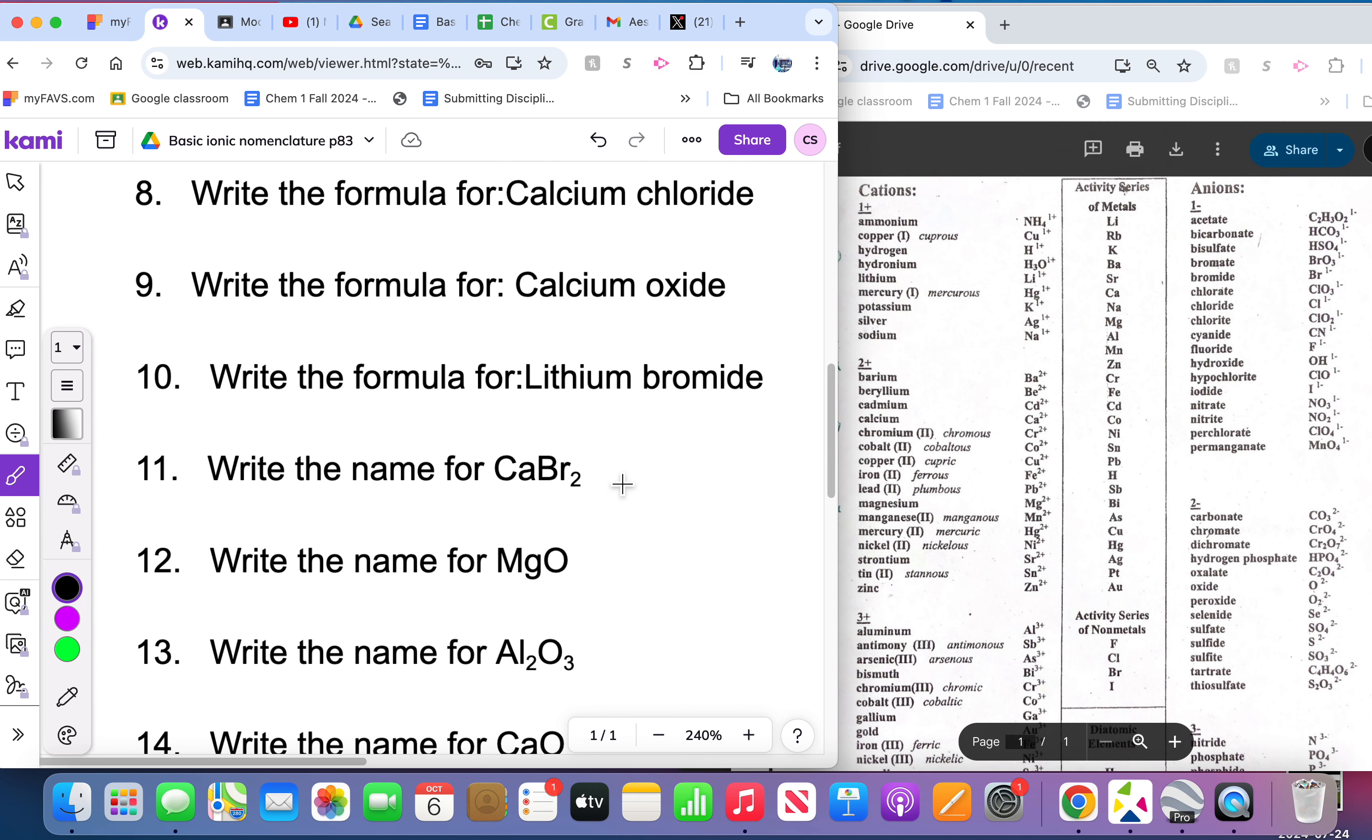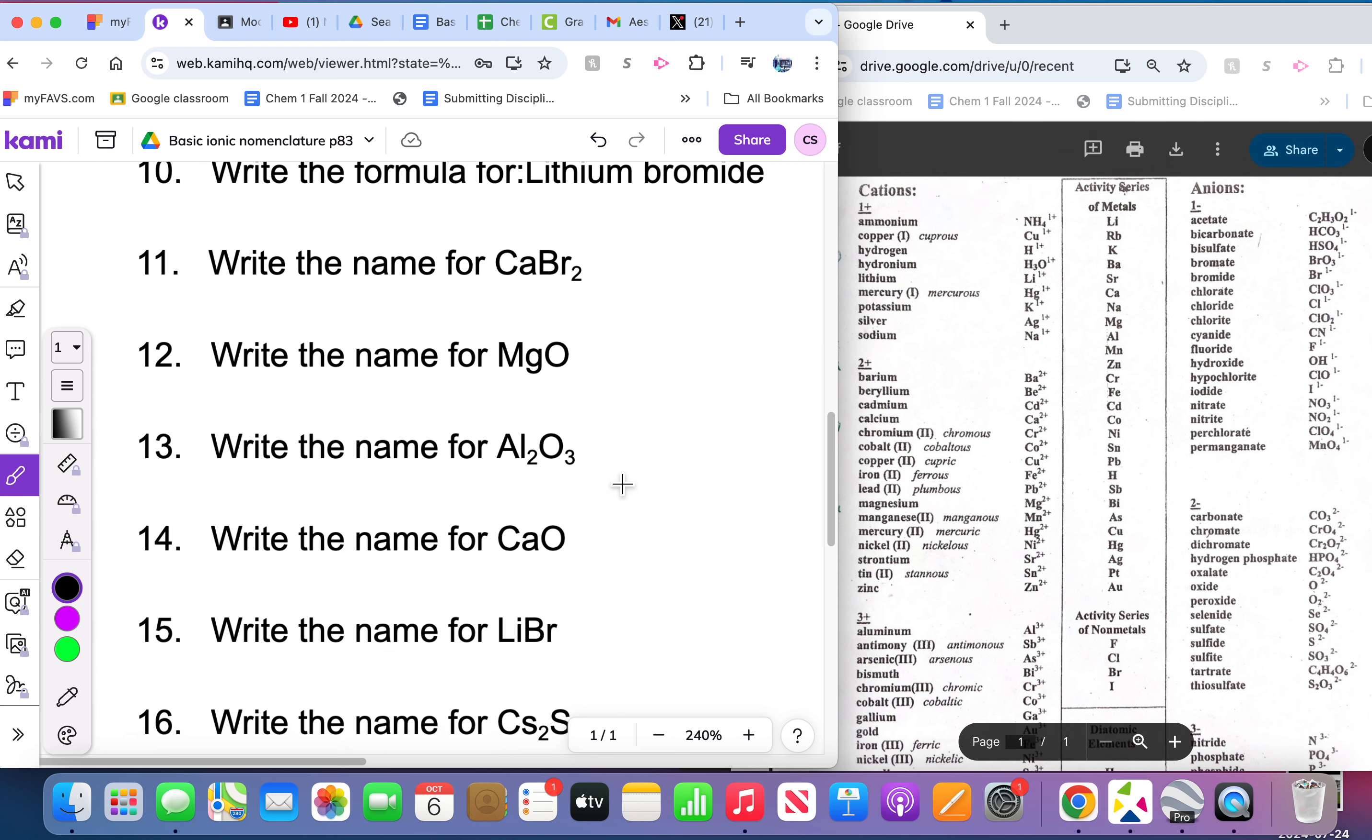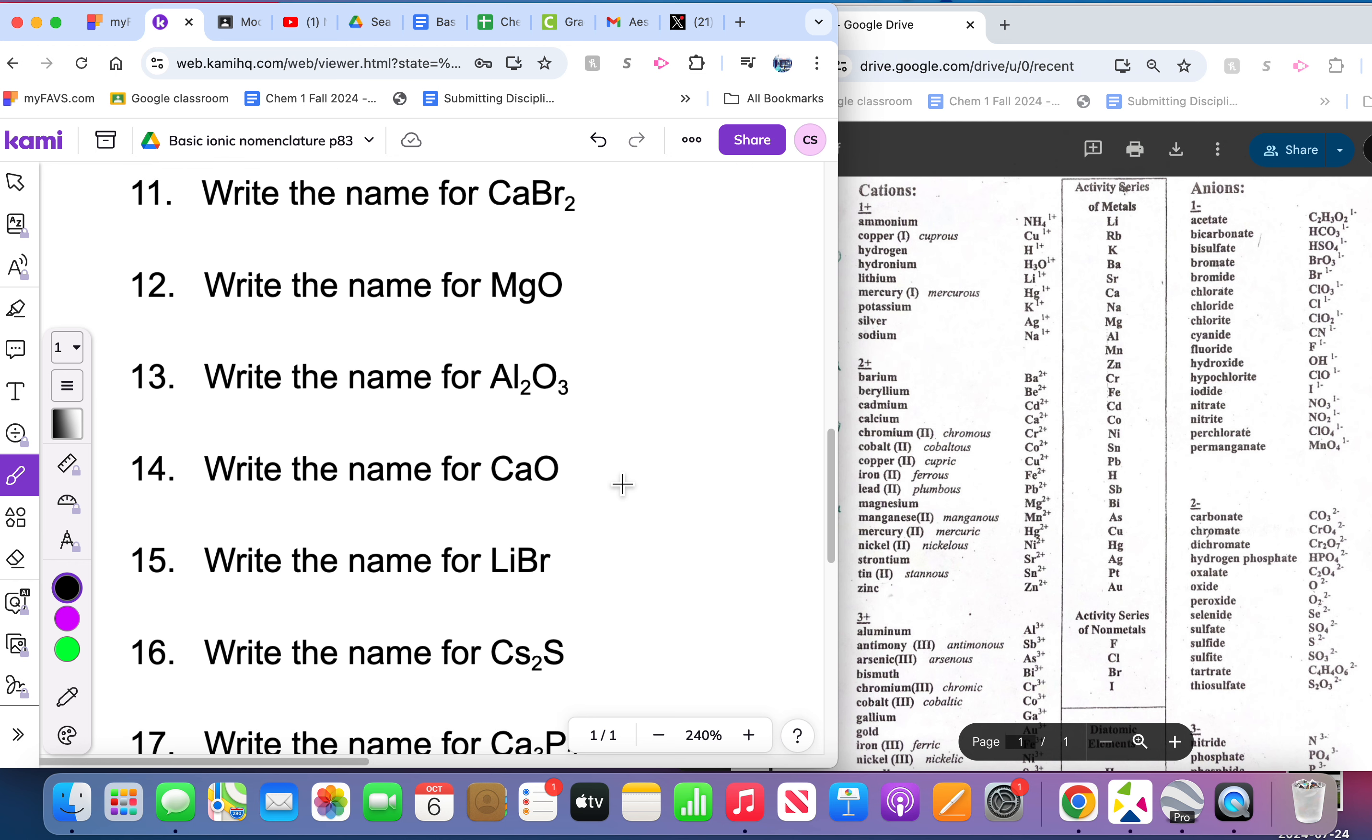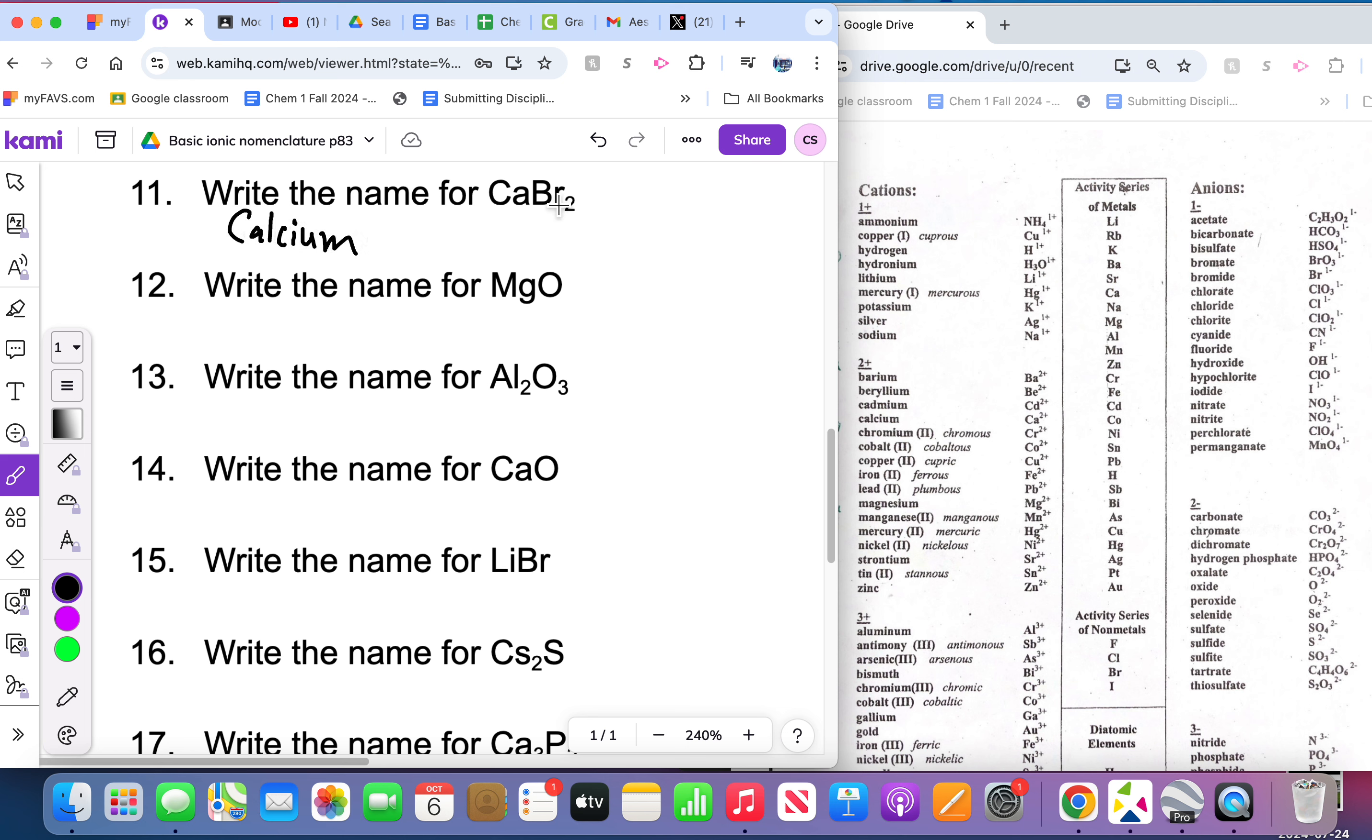Now let's go to number 16 and write the name. For calcium bromide, all you got to do is look up the name on the chart here. Calcium, write the name exactly like it's spelled, and then look up Br, find Br, bromide.